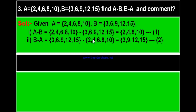A better method: simply cancel the common elements from both sets. Cancel 6 and 6 — what is left in B is {3, 9, 12, 15}, giving B minus A. Similarly for A minus B, cancel the common element 6, and what remains in A is {2, 4, 8, 10}. Like this you can find A minus B and B minus A very easily.